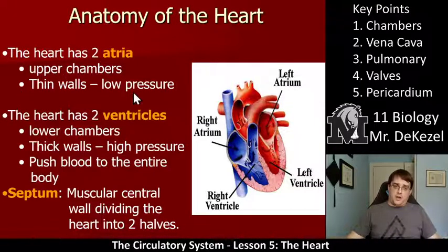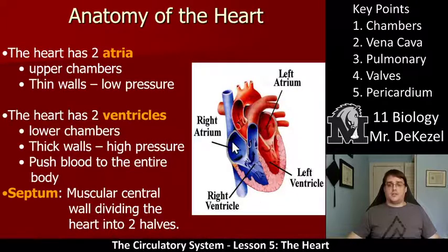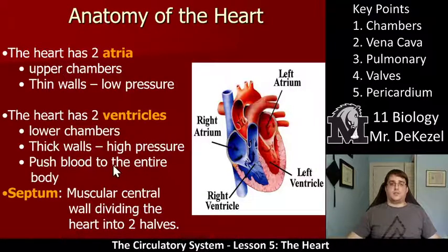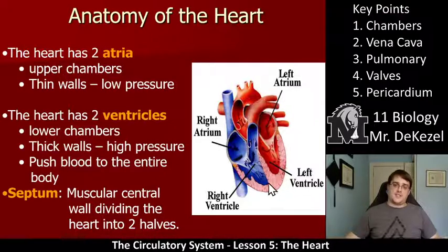The atria have very thin walls because there is not much pressure — they don't have far to pump blood. The heart also has two ventricles, which are the two bottom chambers. You can see how much thicker the walls of the ventricles are compared to the atria. They have thick walls because there is high pressure, as they need to push blood out to the entire body. We also have the septum, which is the muscular central wall dividing the two halves.